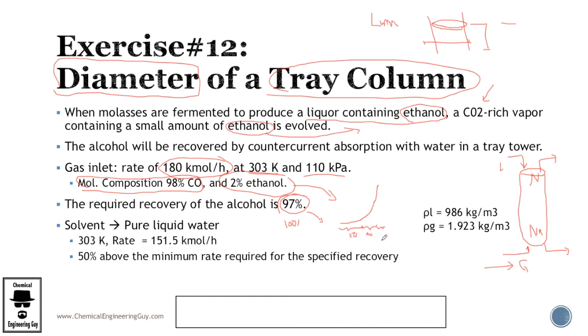It is very easy to get maybe to 50% and then to get to 90% is a little bit harder, but then 90 to 95 is super hard and then 95 to 97 is super hard. So maybe that's why they choose 97%. Okay, the solvent is going to be pure liquid water. Remember that ethanol is very soluble in water and CO2 is not that soluble in water, so this is a good solvent choice.